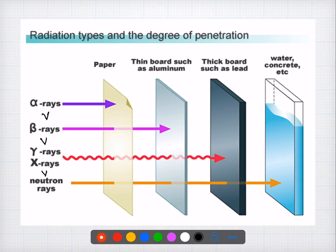Coming to question number three: the darkness of the radiograph depends upon all of the following — it's a simple elimination-based question. The answer is angulation of the cone. Angulation of the cone does not have any relationship with the darkness, contrast, or any characteristic features of a radiograph.